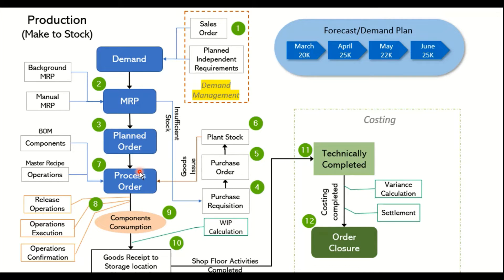When converting a planned order into a process order, the system reads the bill of material and the master recipe created for the product, and copies these details to the process order. The two key master data elements are: the bill of material, which holds the complete list of components, and the master recipe, which holds the details of operations and their sequence across work centers or machines.